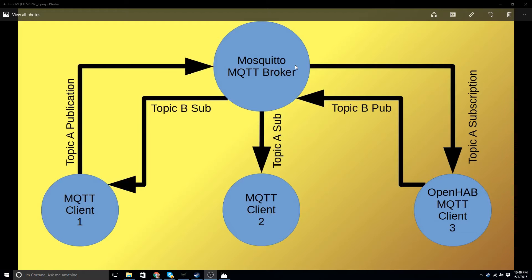The main point is that it is a broker and it brokers between each of the MQTT clients. Here I show MQTT client number one, client number two, and client number three that I've labeled specifically as OpenHAB. One thing to understand about OpenHAB is that even though it's a big, huge home automation system, from an MQTT protocol point of view it is a client, not the broker. I did not understand that initially.